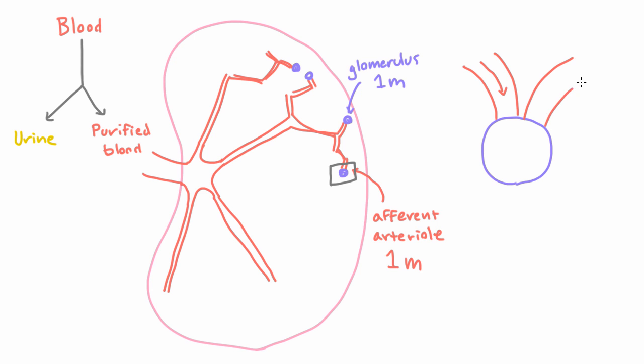We have another blood vessel coming out, which is going to carry blood out, and this is not called the afferent arteriole, but it's called the efferent arteriole.